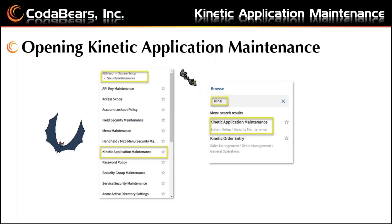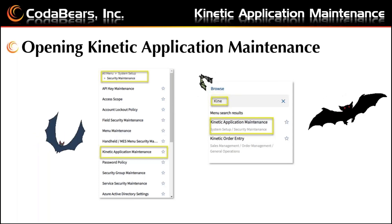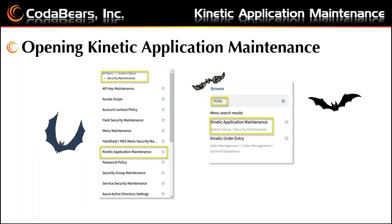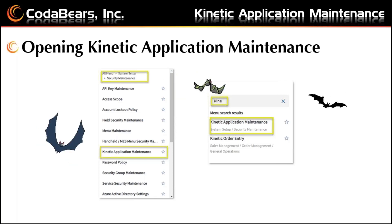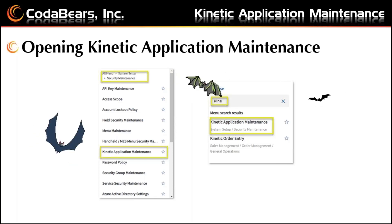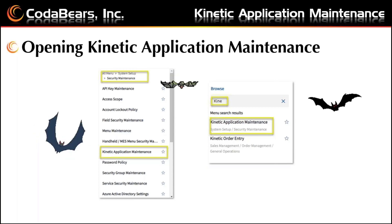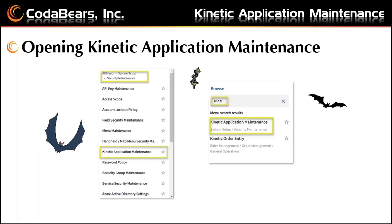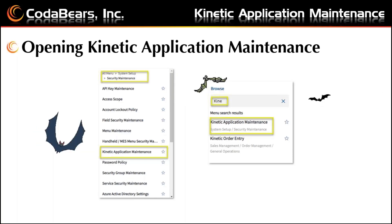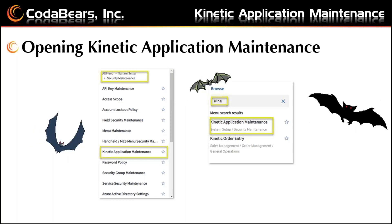Opening Kinetic Application Maintenance does not need to be scary, though you may not use it very often. You can find it under System Setup > Security Maintenance, as long as you have the permissions. Or you can use the Epicor search menu to find the Kinetic Application Maintenance menu item.